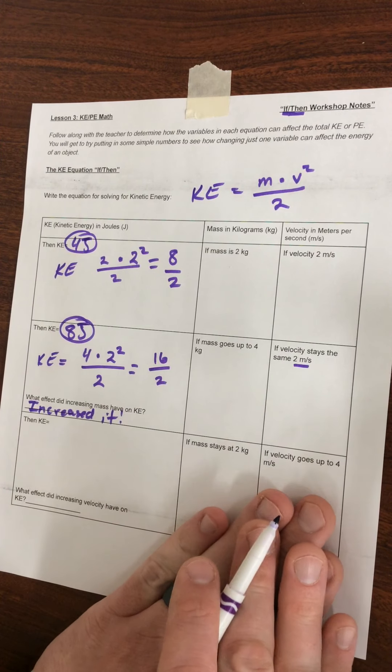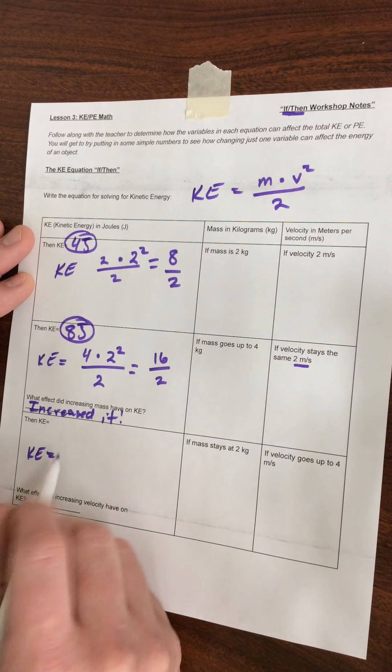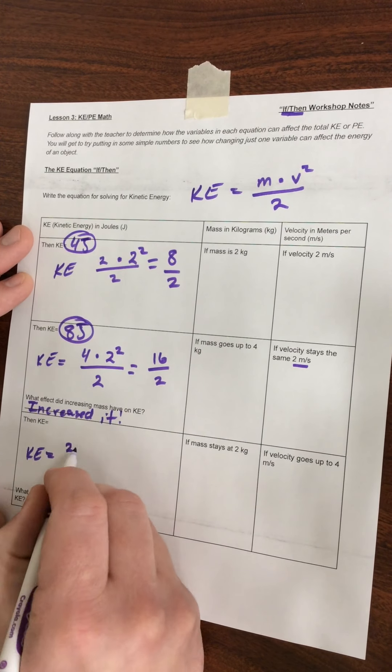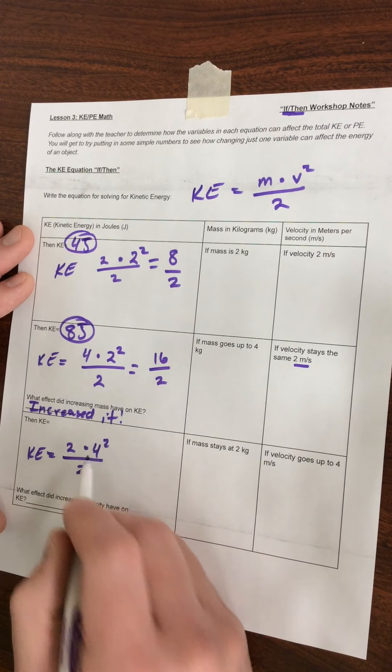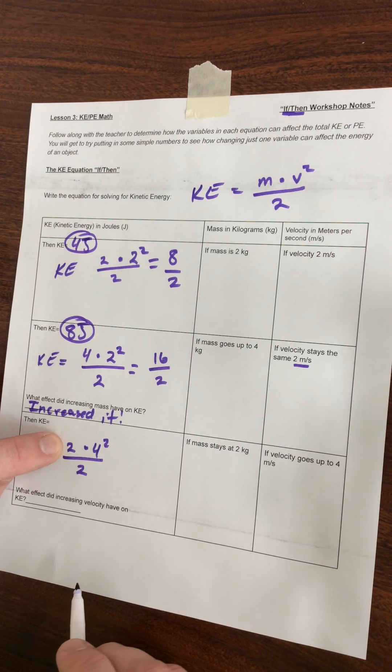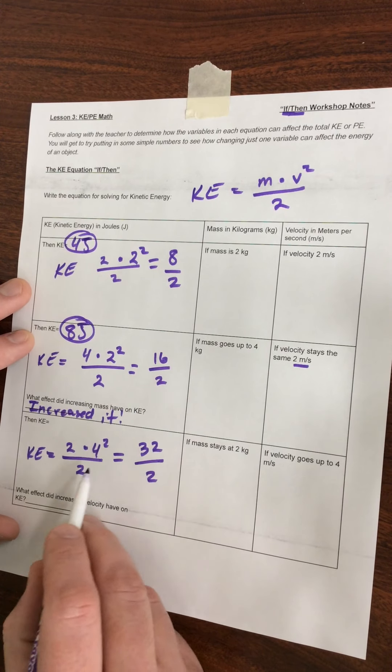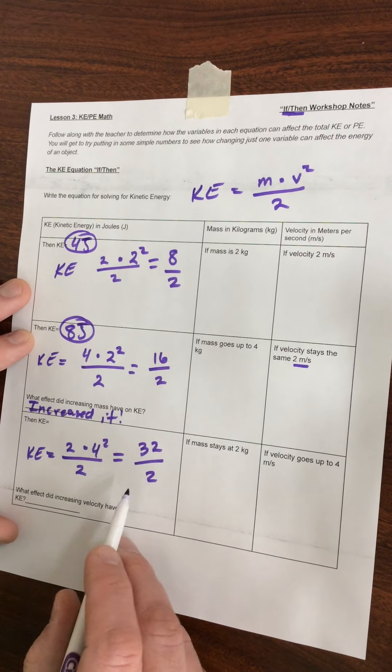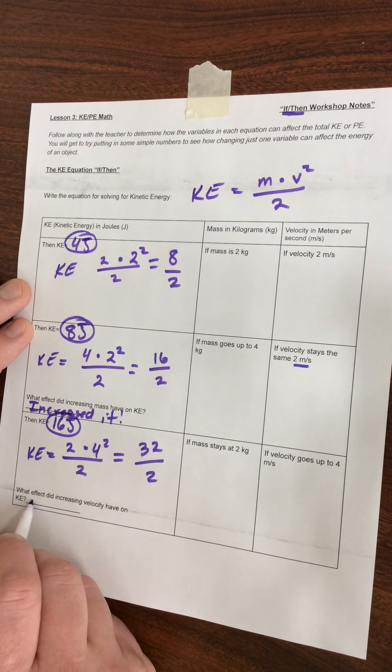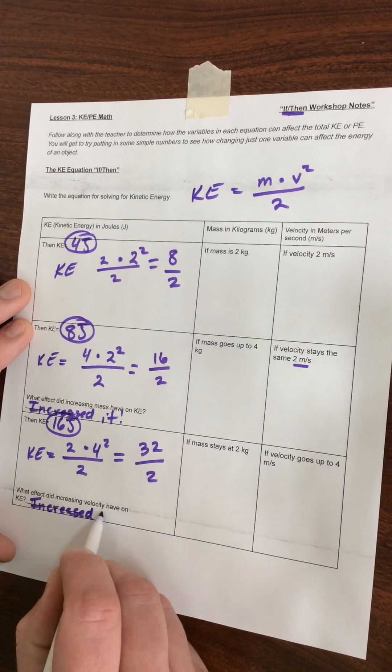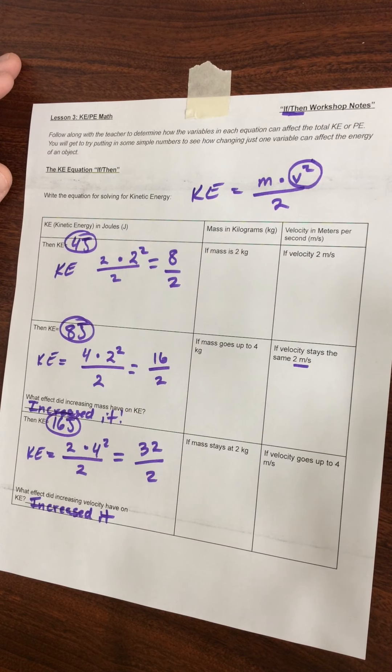Now we're going to look at what happens when we change velocity. KE equals, our mass is going to stay the same as it was in the first problem at two kilograms. But now our velocity is going to go up to four meters per second, and we can't forget to square it. Four squared is 16, 16 times two gives us 32 in the numerator, divide that by two. 32 divided by two is 16 joules. So what effect did it have? It increased KE again, but it increased it by even more because that velocity factor is squared.